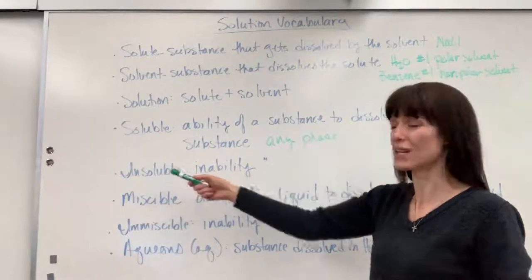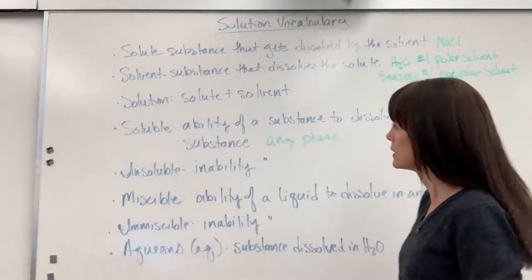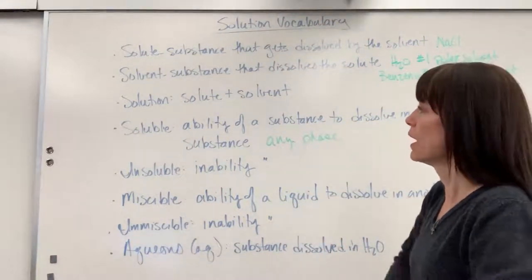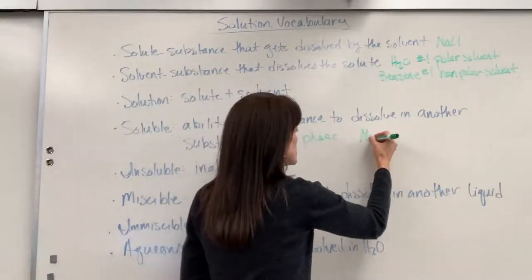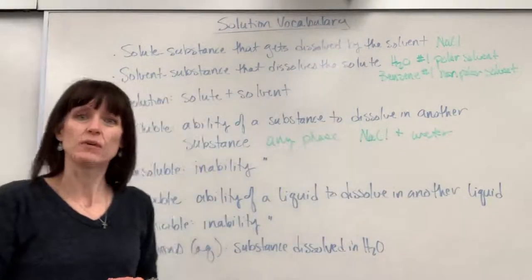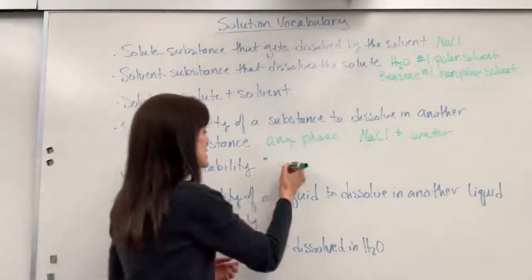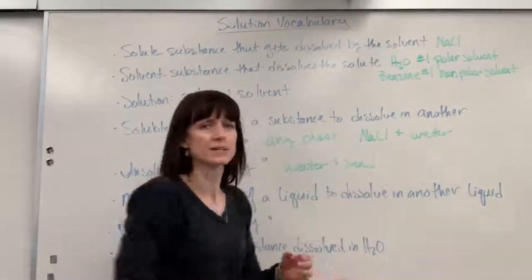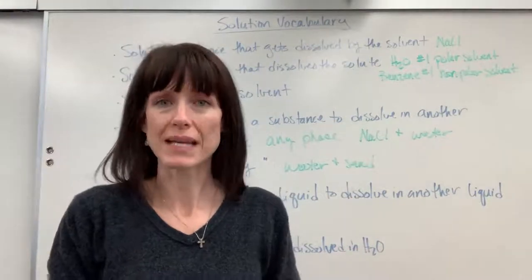Insolubility — something that's insoluble — is just the inability to dissolve in something else. An example of something soluble would be sodium chloride and water: that solid dissolving in the liquid is soluble. Now something that would be insoluble: water and sand. That sand is just going to sit on the bottom of the beaker; it won't dissolve. So the sand is insoluble.